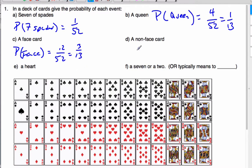A non-face card, well, that's going to be 1 minus the probability of a face card, which I know is 1 minus 3 out of 13. Oh, 13, which is going to be 10 out of 13.